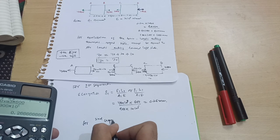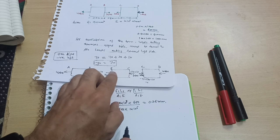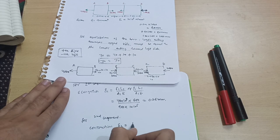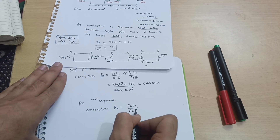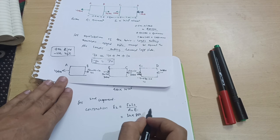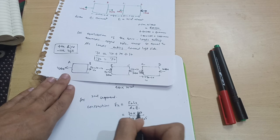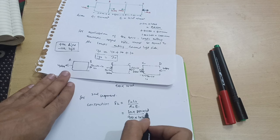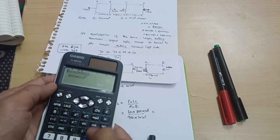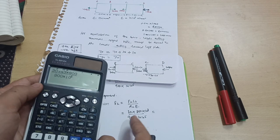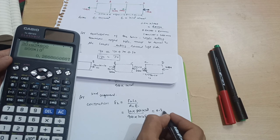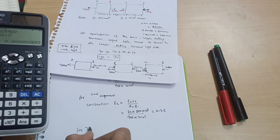For segment BC, contraction occurs. δ₂ = (30×10³ × 800) / (900 × 1×10⁵) = 0.26 mm contraction.